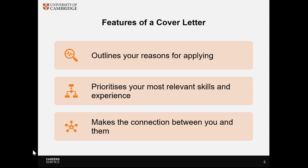You need to be specific about what you've done, how you did it, and the results that came out of those actions. And most importantly, you need to make the connection between you and the organisation or role that you're applying for. Demonstrate the research that you've done and make the connection between your motivations and theirs, your skills and experience and what they're looking for in the role. Revisit our video on assessing job adverts to help you identify what a company is looking for.